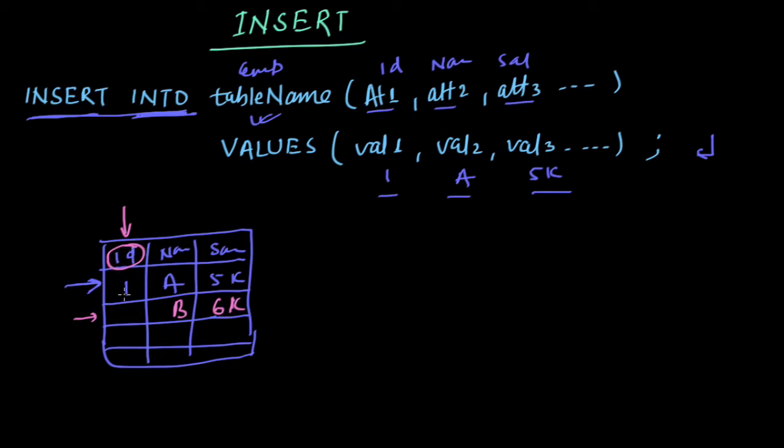It will automatically increment from the last value. So it is 1, then it will take 2 automatically. So here in that case we also need not to provide this attribute 1. These attribute 1 and value 1 will not be provided if the id field is auto incremented. So we can provide only those columns here for which I need to insert values.